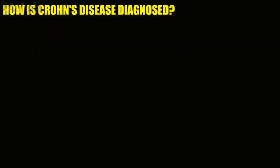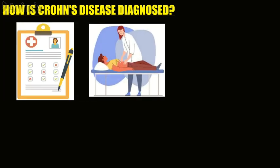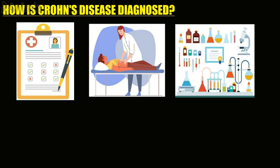How is Crohn's disease diagnosed? The first step to diagnosing Crohn's disease is a complete medical history, a physical exam, and a series of tests to rule out other conditions that may cause similar symptoms. These include irritable bowel syndrome (IBS), lactose intolerance, and ulcerative colitis.